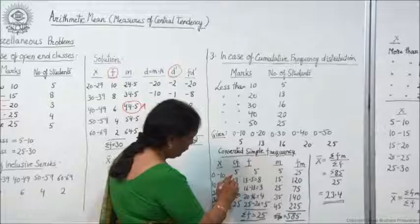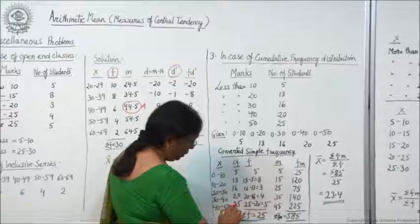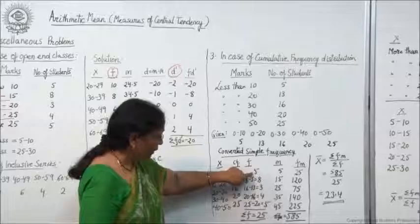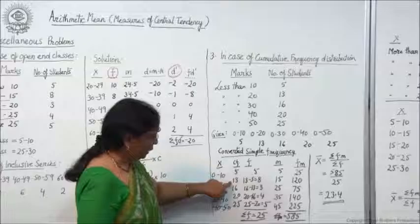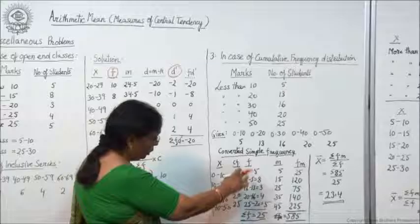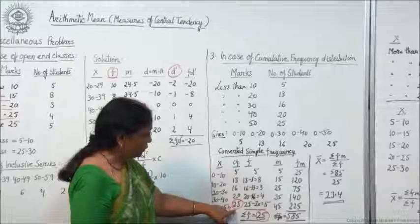Now you have to convert these frequencies into simple frequencies. How to convert: 5 is 5; then 13 minus 5 is 8; 16 minus 13 is 3; 20 minus 16 is 4; 25 minus 20 is 5. This way you will deduct the previous one from each value, and you get simple frequencies: 5, 8, 3, 4, and 5. The total of these frequencies will give you 25, the same as the last cumulative frequency value — you can cross-check it.